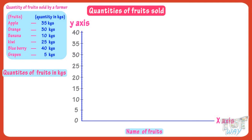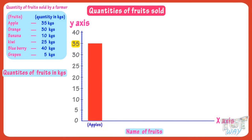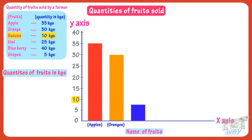35 kgs of apples were sold, so make a rectangular bar up to the mark of 35 and label it with apples. The next fruit is orange — quantity of oranges sold is 30 kgs, so make a rectangular bar up to the mark of 30 and label it with oranges. The next fruit is banana — quantity of bananas sold is 10 kgs, so make a rectangular bar up to the mark of 10 and label it with banana.